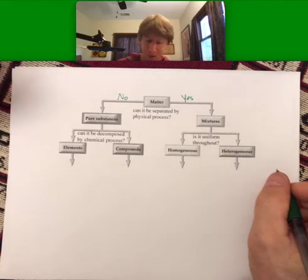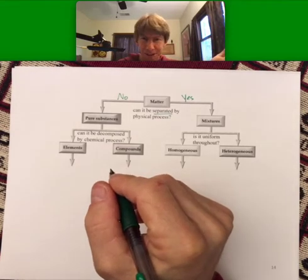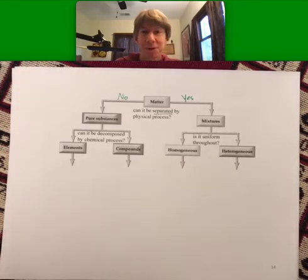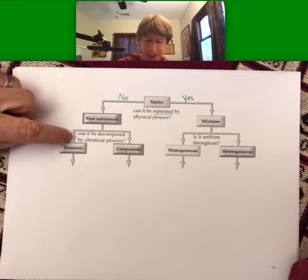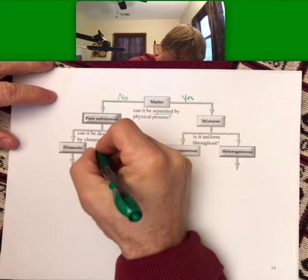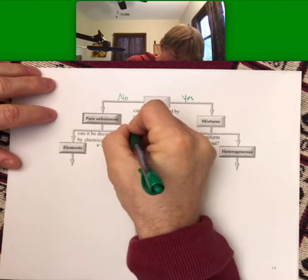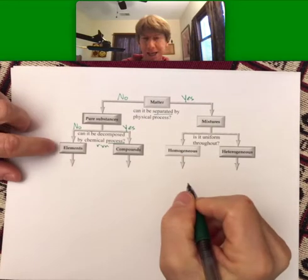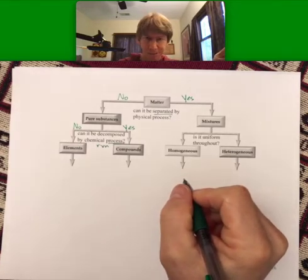Separations are one type of physical process. There are other physical processes which are not separations. In fact, we have a separations lab. Once you have it broken down into pure substances, can it be decomposed by a chemical process, a chemical change or a chemical reaction? If the answer is yes, then it's a compound. If the answer is no, then it's an element because it's only got one type of atom.